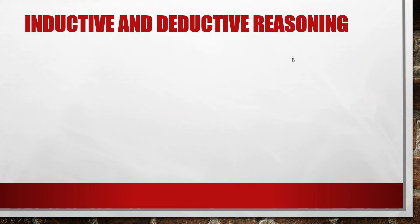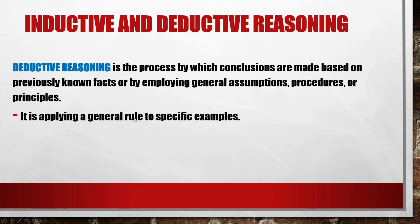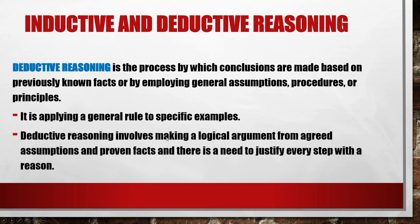We now proceed to deductive reasoning. Deductive reasoning is the process by which conclusions are made based on previously known facts or by employing general assumptions, procedures, or principles. It is applying a general rule to specific examples. Deductive reasoning involves making a logical argument from agreed assumptions and proven facts, and there is a need to justify every step with a reason.